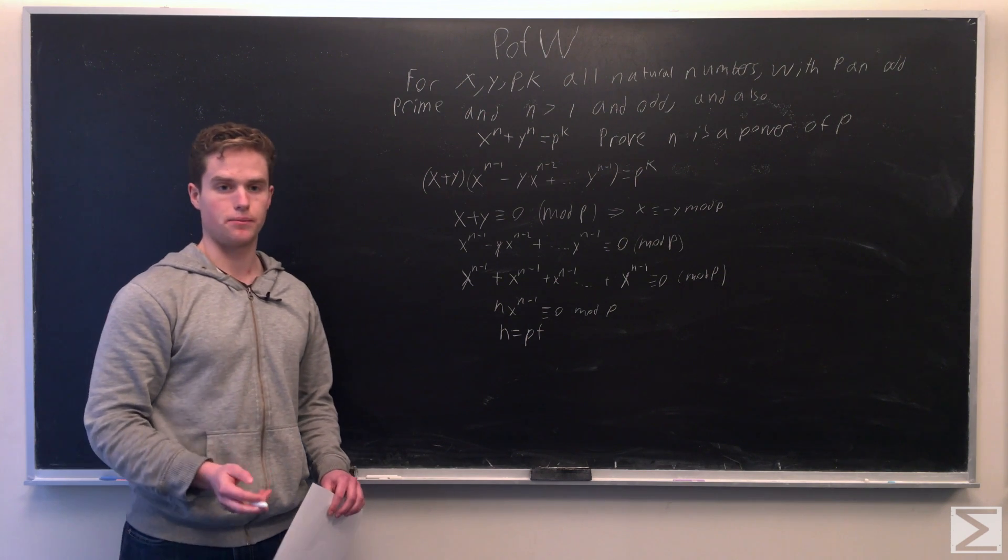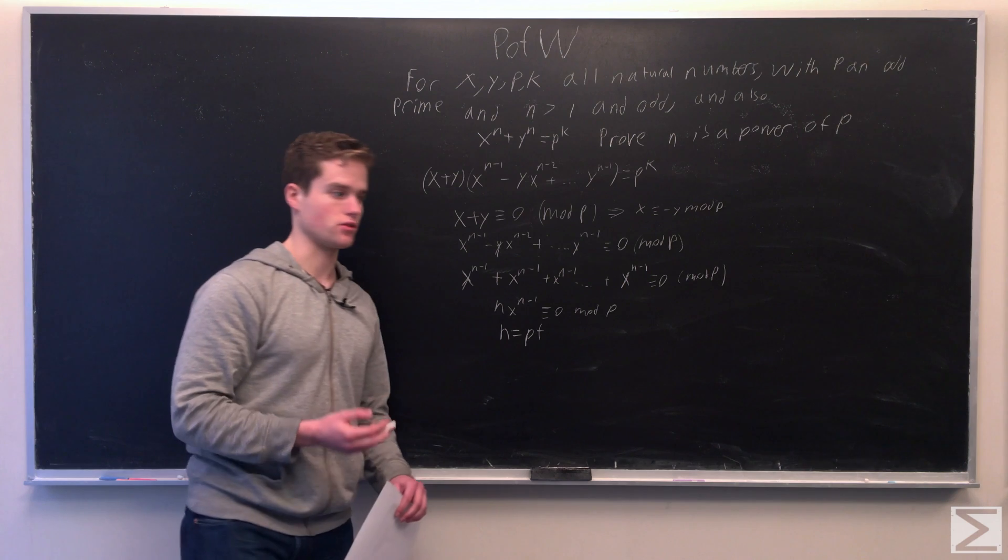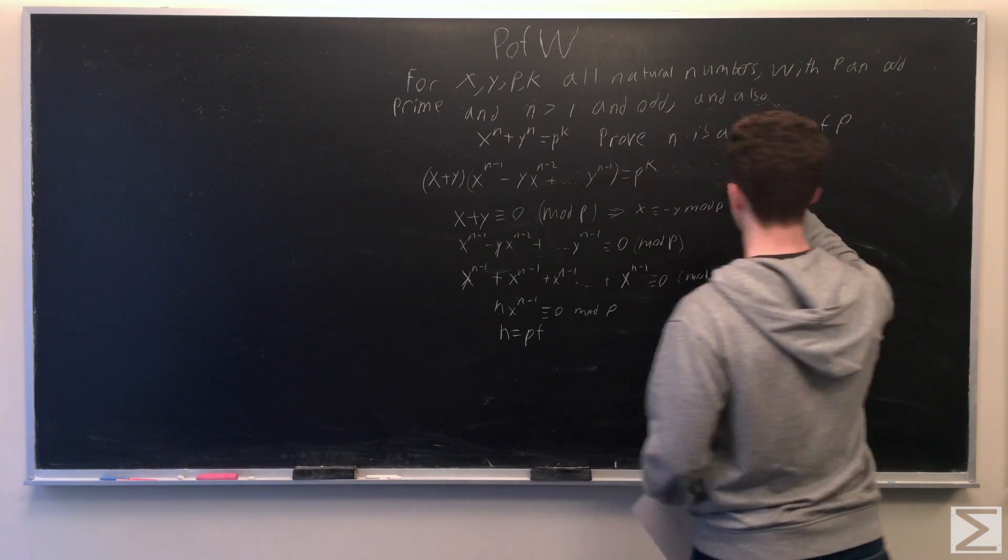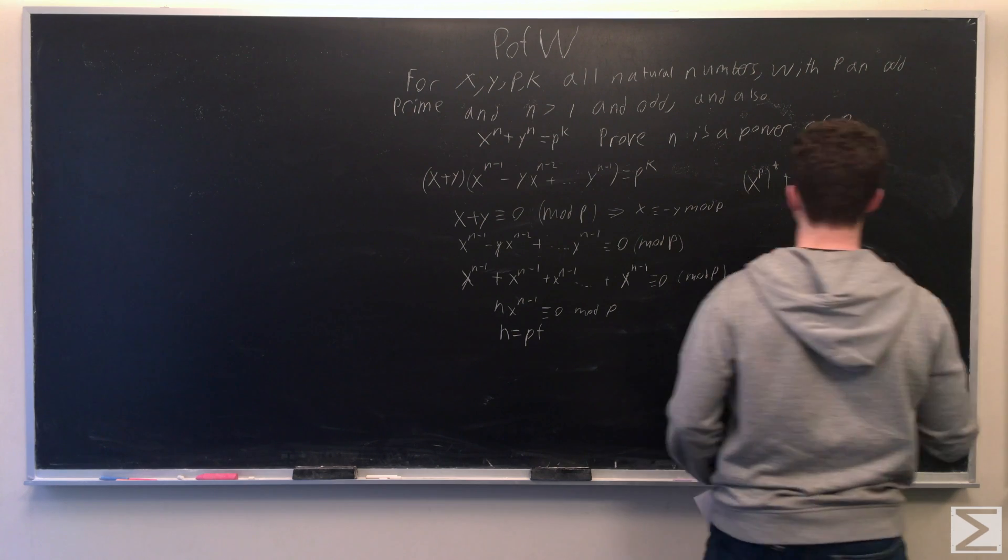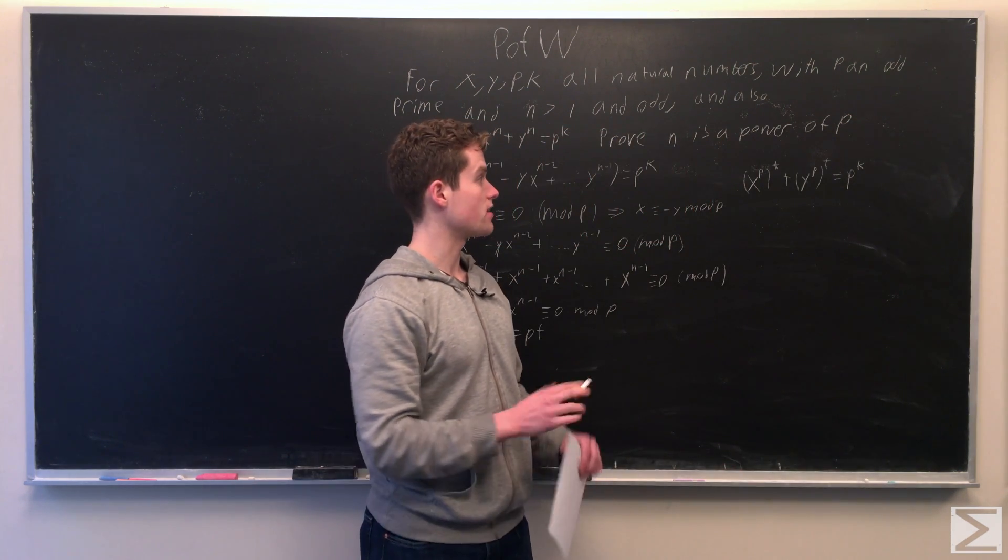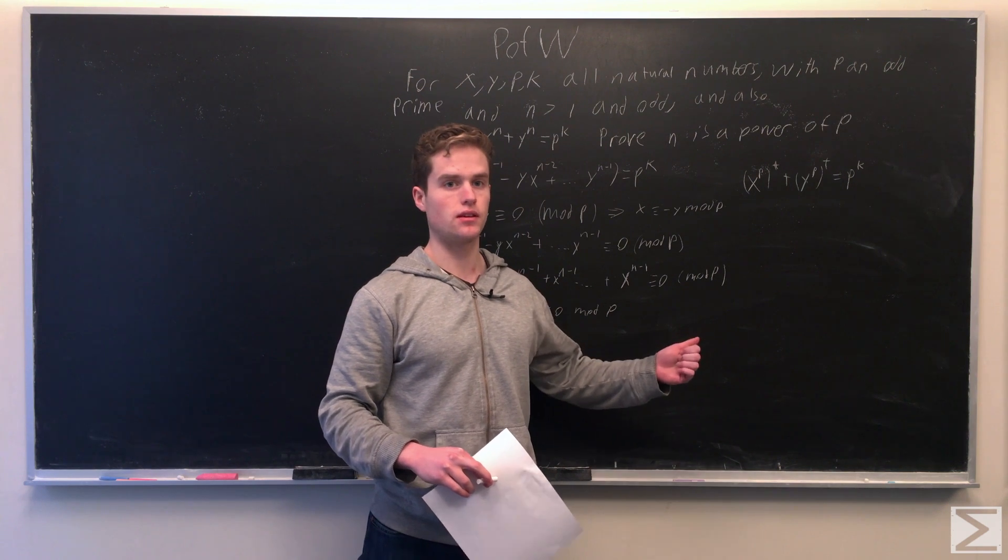So in this case, n must be some multiple of p. So if we plug that back into our original equation. So now we can write the equation in the form x to the p to the t plus y to the p to the t equals p to the k.